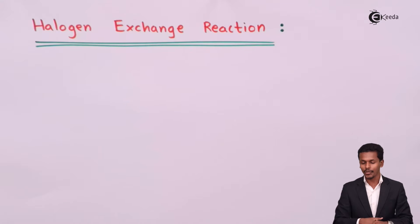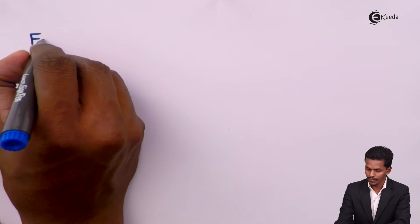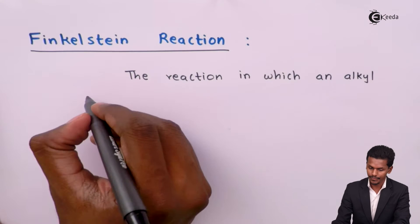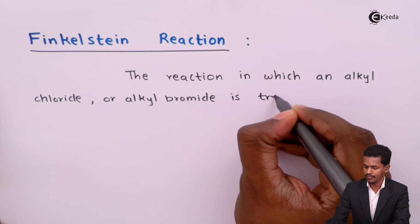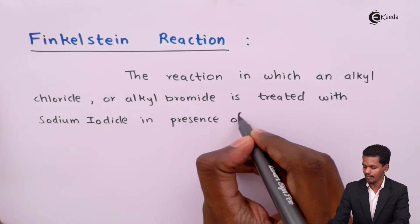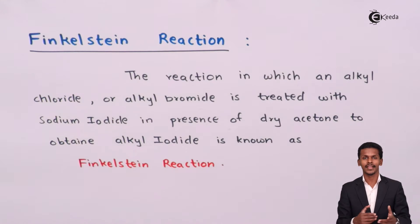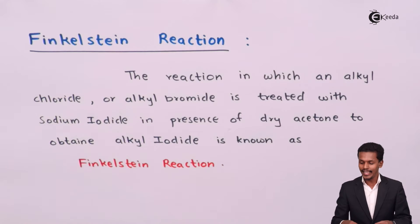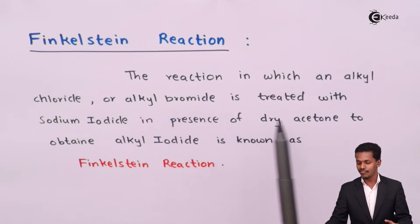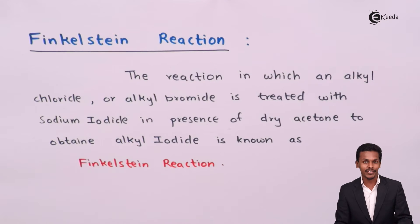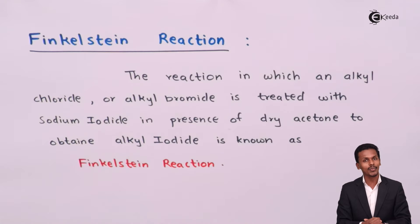There are basically two types of halogen exchange reaction. The first one is the Finkelstein reaction. The Finkelstein reaction is the reaction in which an alkyl chloride or alkyl bromide is treated with sodium iodide in the presence of dry acetone so as to obtain an alkyl iodide.